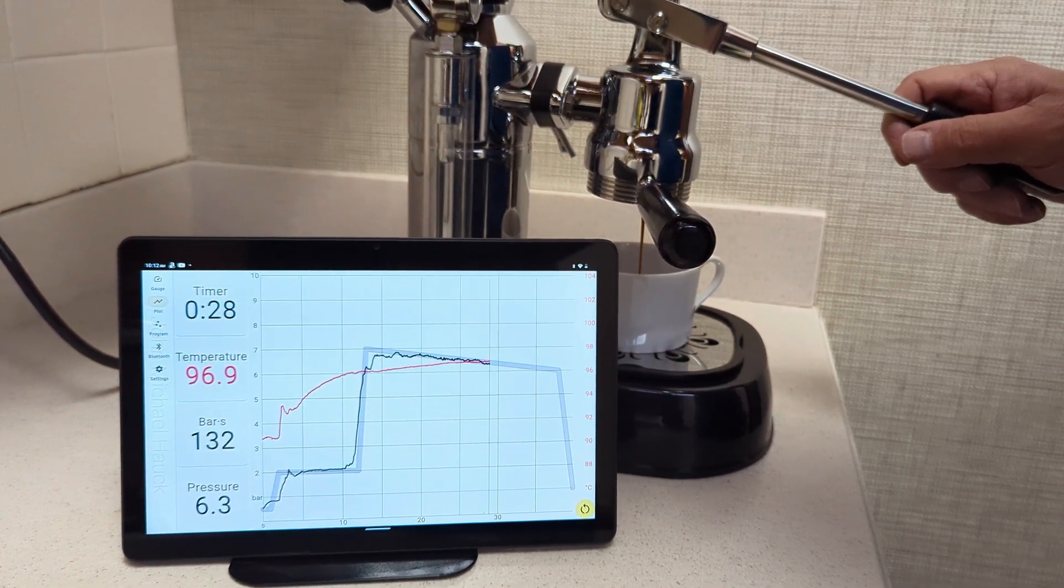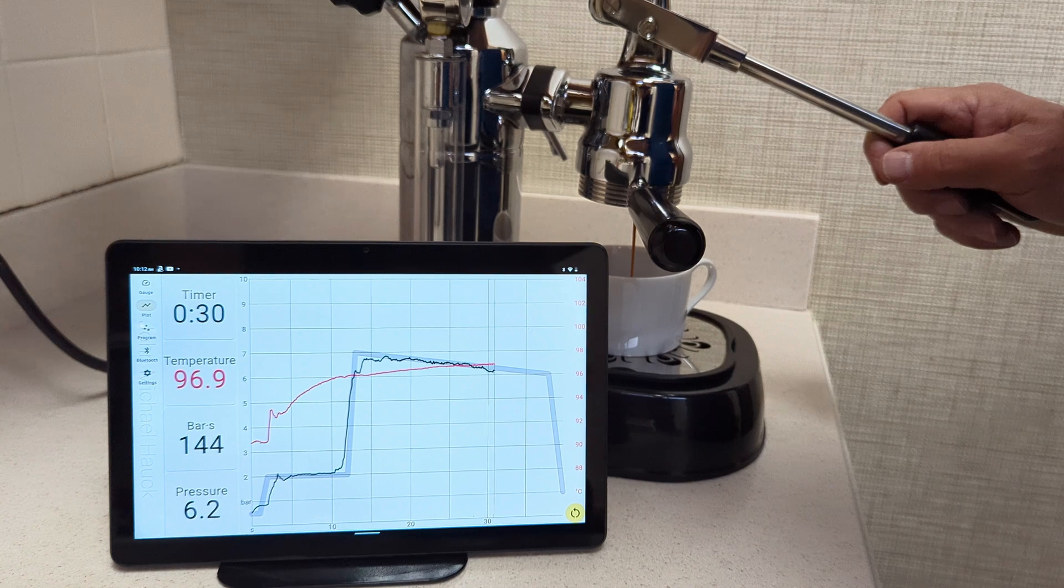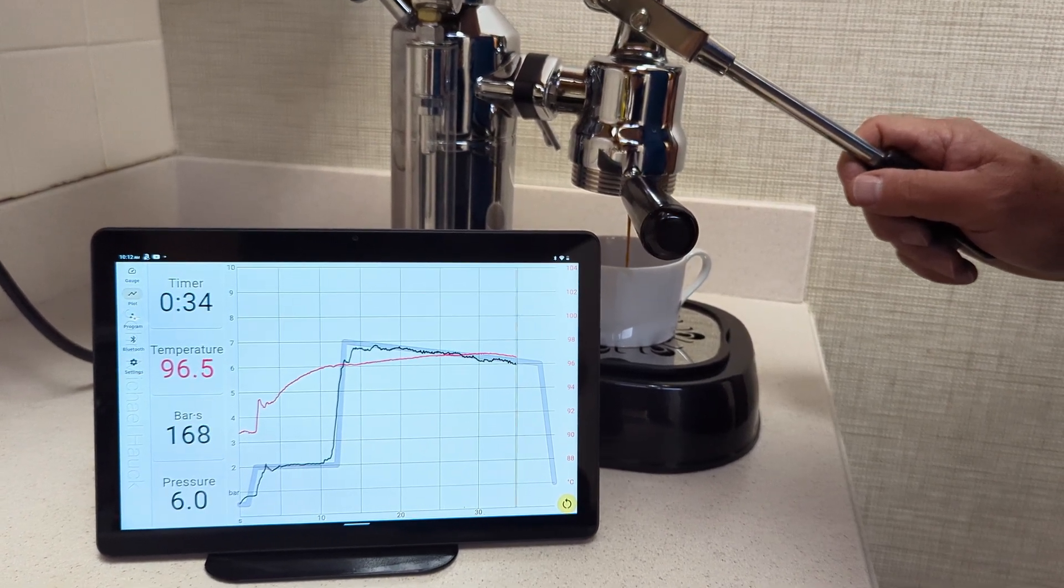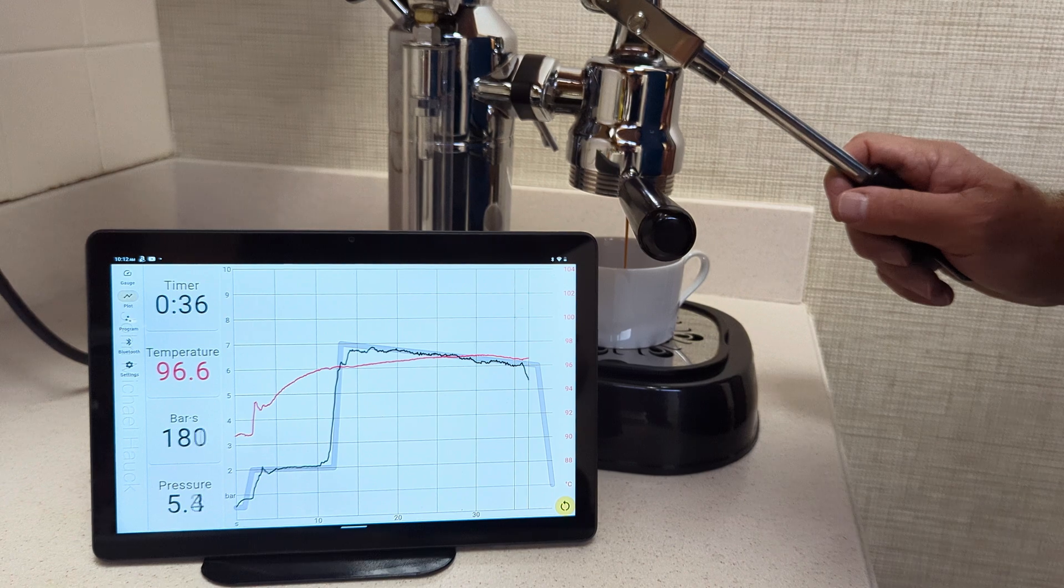You can see temperature is slowly going up. And again, the bar S is the amount of pressure over time.